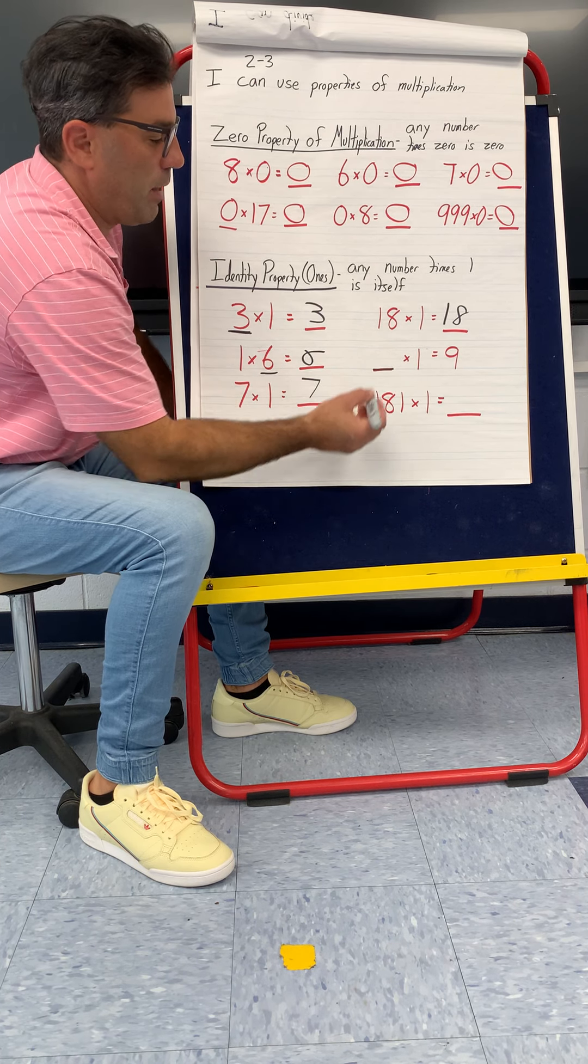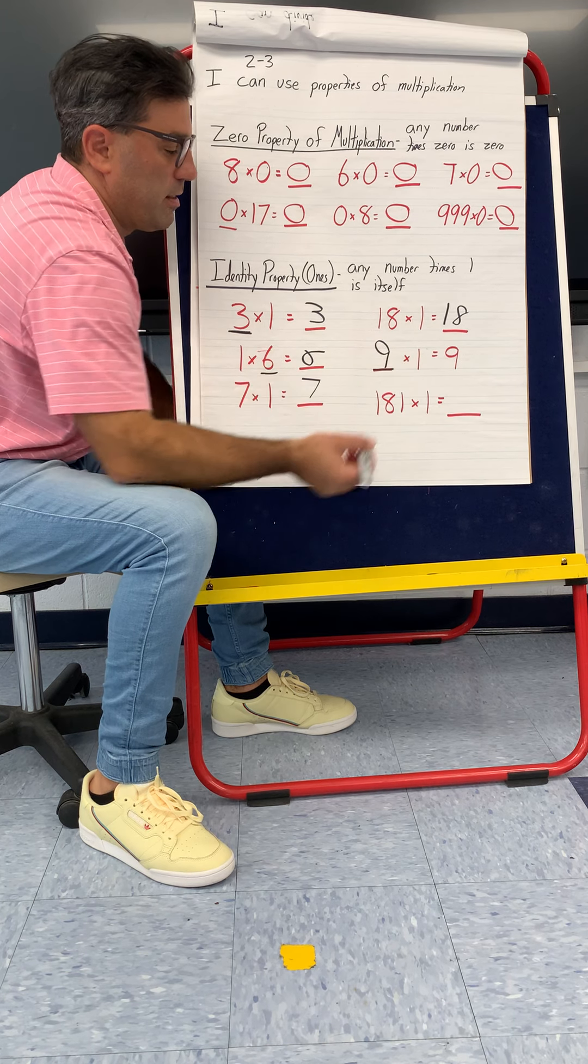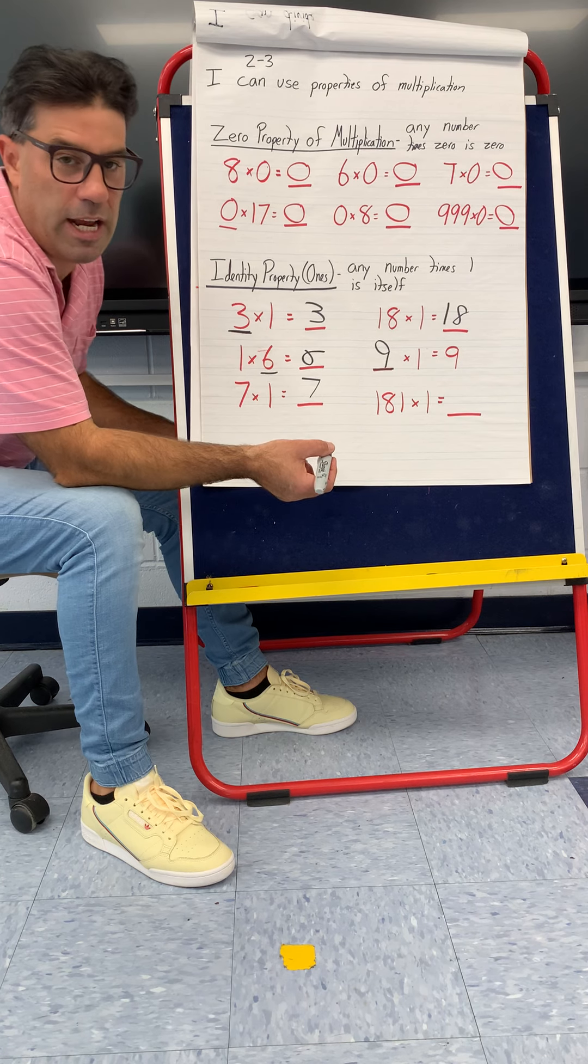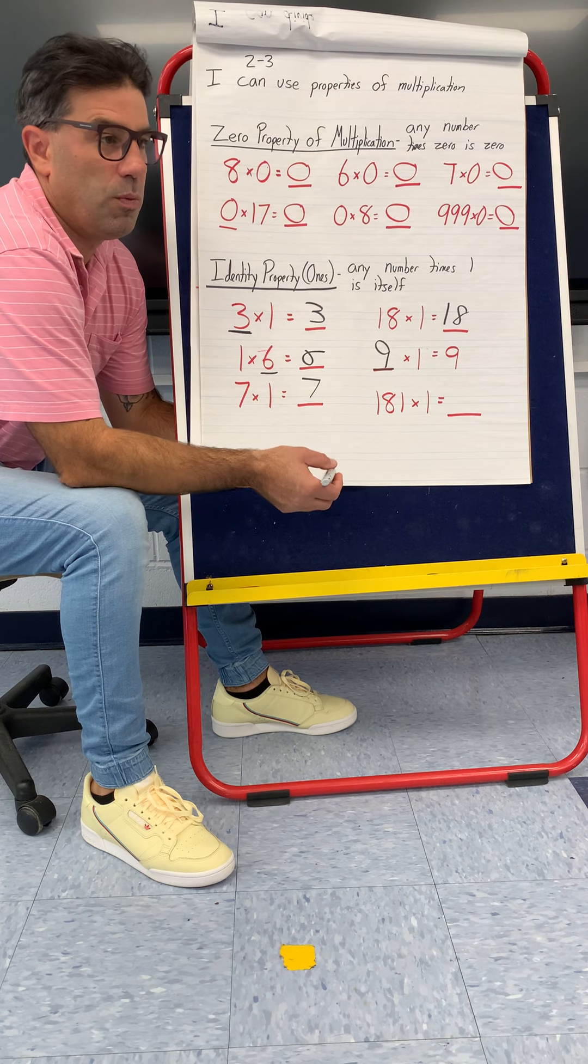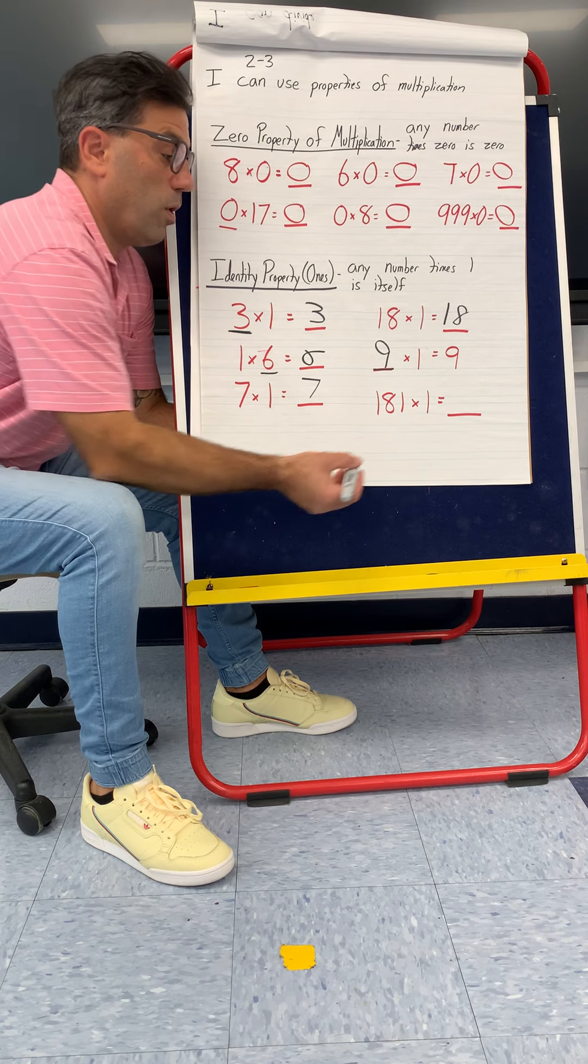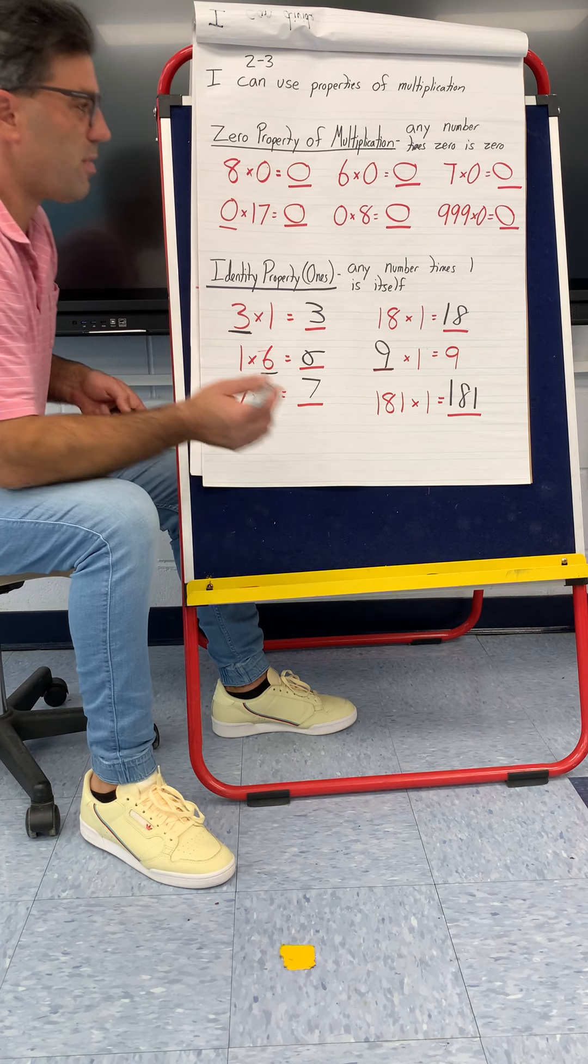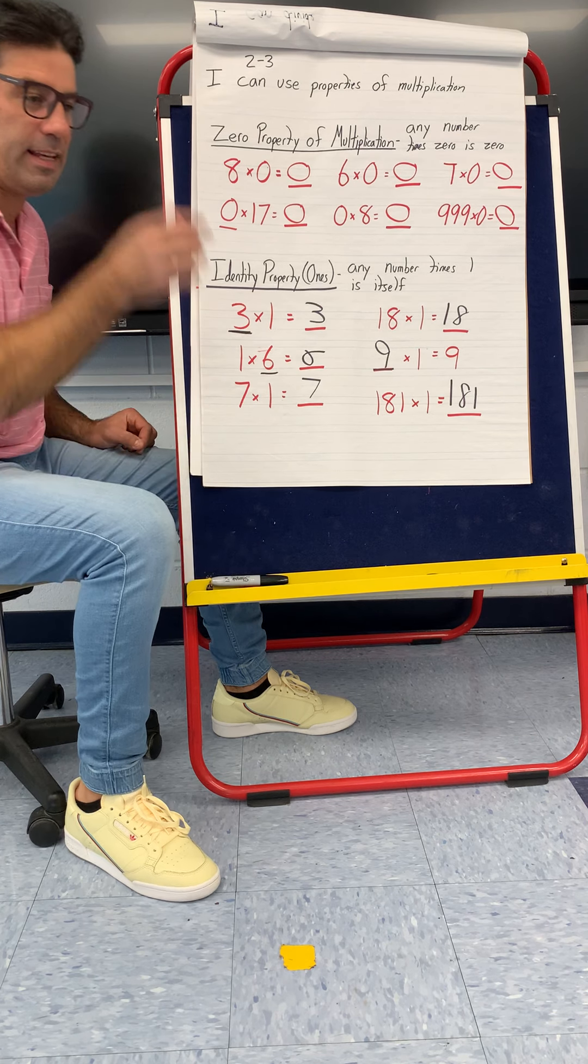Blank times one is nine. Well, only one number would make sense. Like what times one is nine? I would have to be nine, because nine times one is nine. It's the only number that would work there.